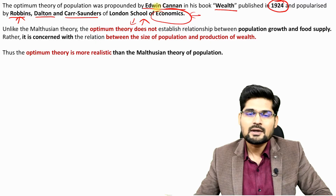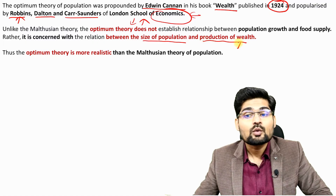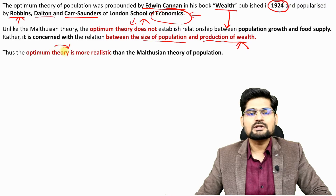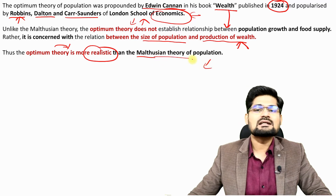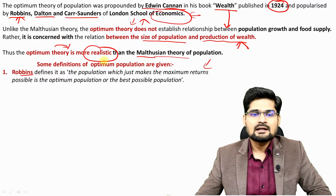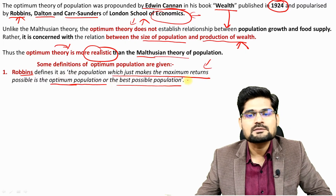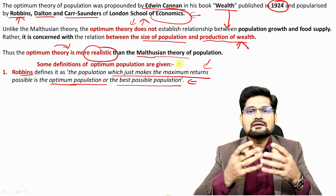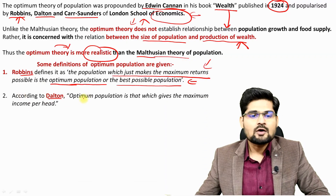Optimum population theory is not merely a criticism of Malthusian theory. It establishes a linkage between the size of population and the production of wealth. Robbins defined optimum population as 'the population which just makes maximum returns possible' — meaning the amount of population that produces maximum economic wealth.